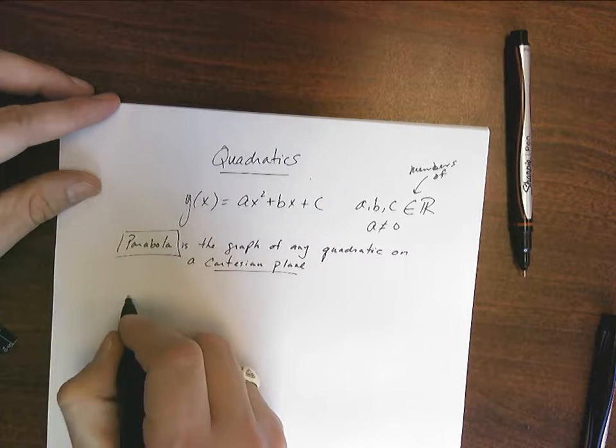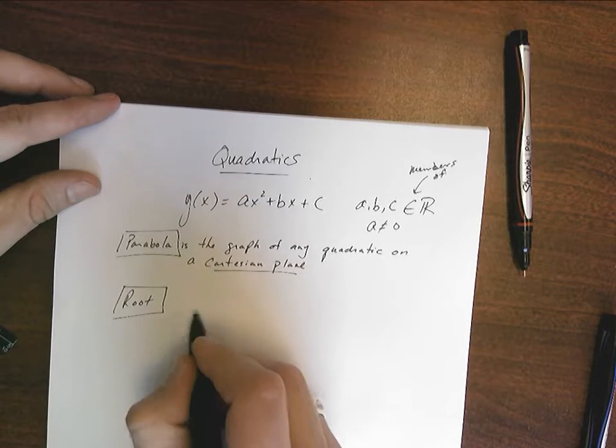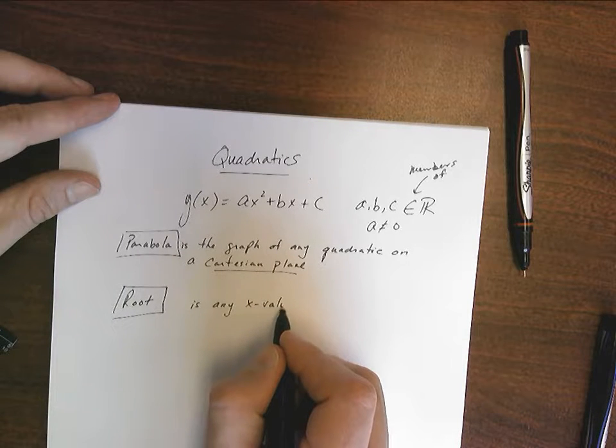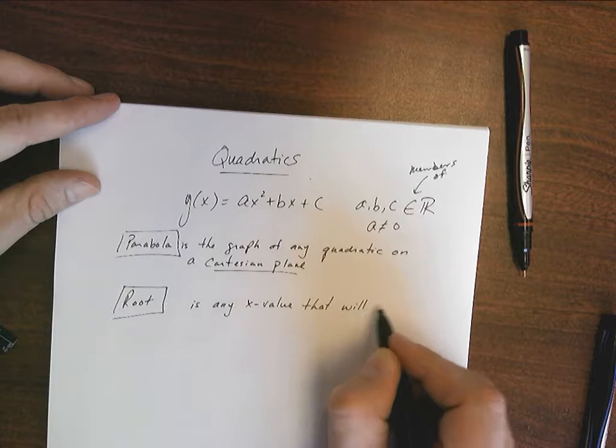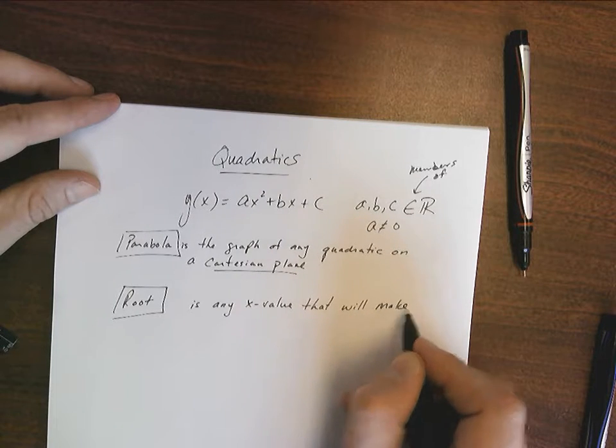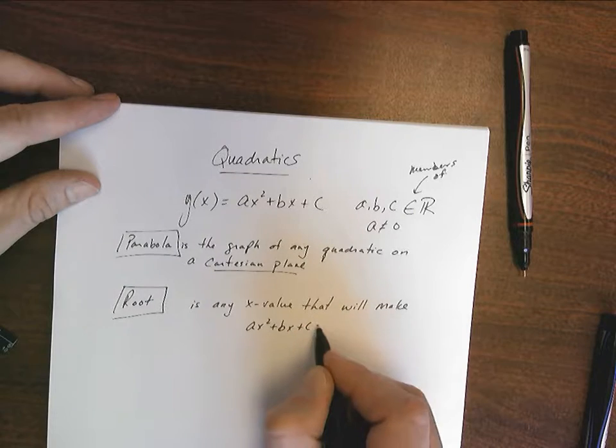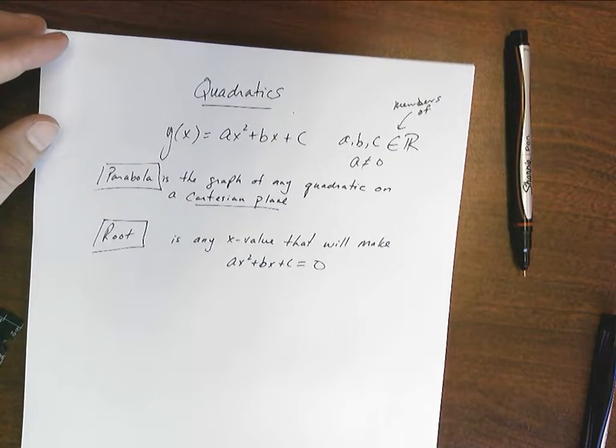Now I want to talk about what a root is. A root is any x value that will make ax² + bx + c equal zero. That's what a root is. It's anything that's going to make that equality hold true.